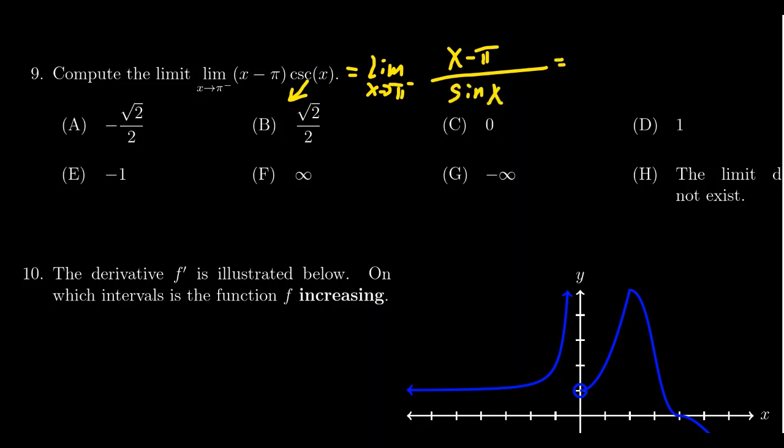Applying L'Hôpital's rule, we take the derivative of top and bottom, still taking the limit as x approaches pi from the left. The derivative of x minus pi is one, and the derivative of sine of x is cosine of x.